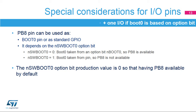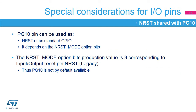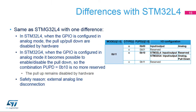PB8 GPIO is available by default because the production value of the N_SWBoot0 option bit is 0. PG10 may be used as a reset pin called NRST or as a GPIO, depending on the NRST_MODE bits in the user option byte. It switches to: reset input/output (default at power-on reset or after option bytes loading when NRST_MODE equals 3), reset input only (NRST_MODE equals 1), or GPIO PG10 mode (NRST_MODE equals 2). Reset input/output is the default because the production value of NRST_MODE is 3.